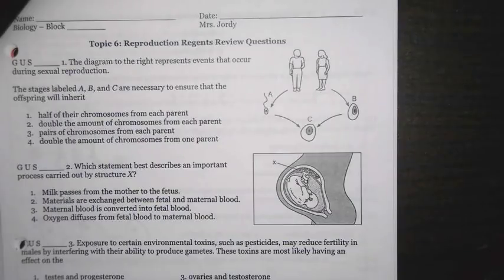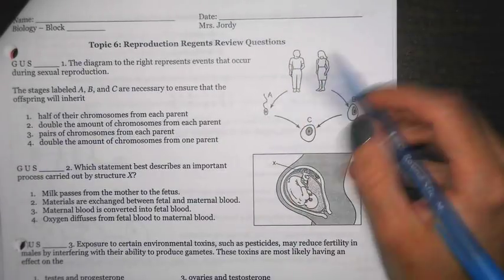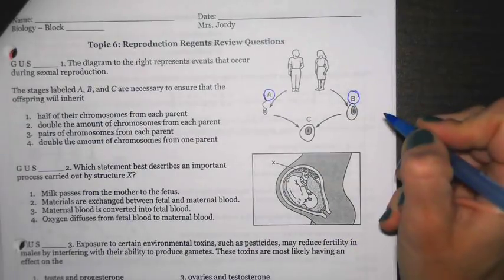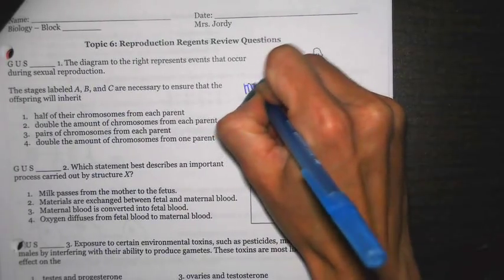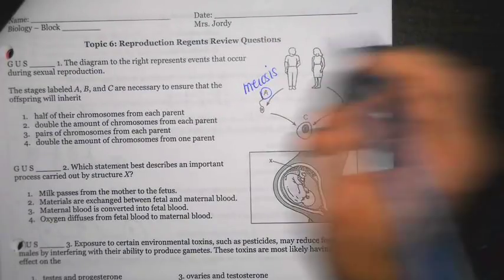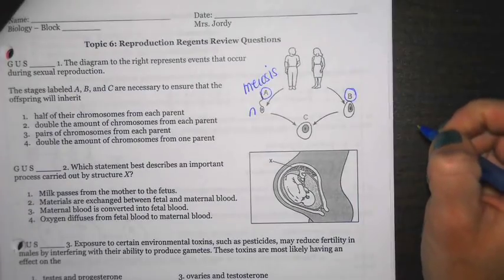Number 1 says, the diagram to the right represents events that occur in sexual reproduction. The stages labeled A, B, and C are necessary to ensure that the offspring will inherit blank. Here we have the male and the female. The male produces sperm, the female produces an egg. So we have to think, what is process A and then what is process B? Process A, remember, is meiosis. We're halving the number of chromosomes, so inside of here you'd have half the normal number, which is typically represented by an N.